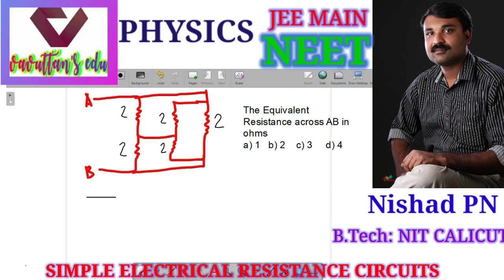This is the terminal A and the terminal B. This point is the same point, so we simplify this branch.